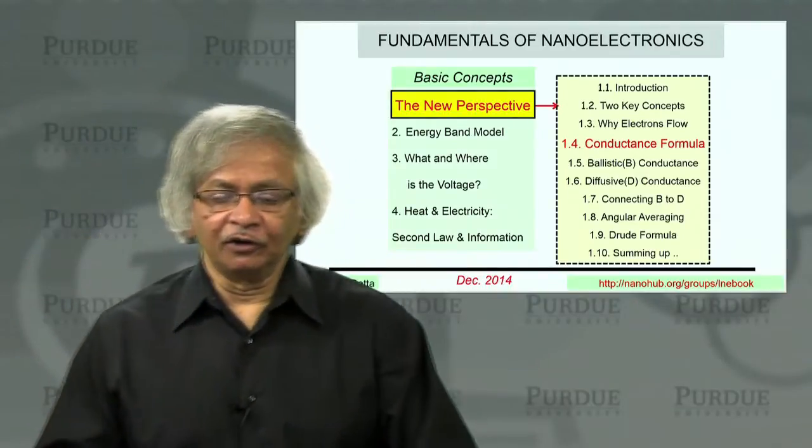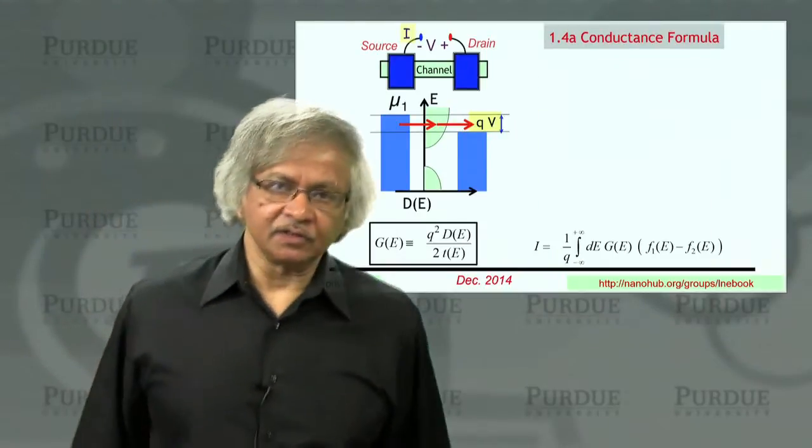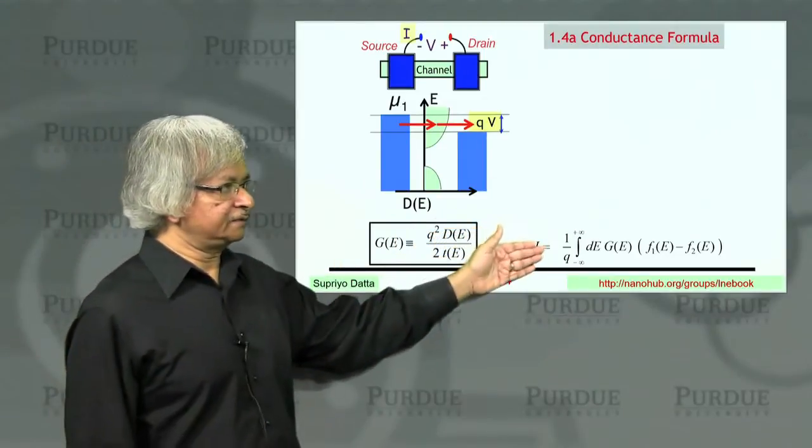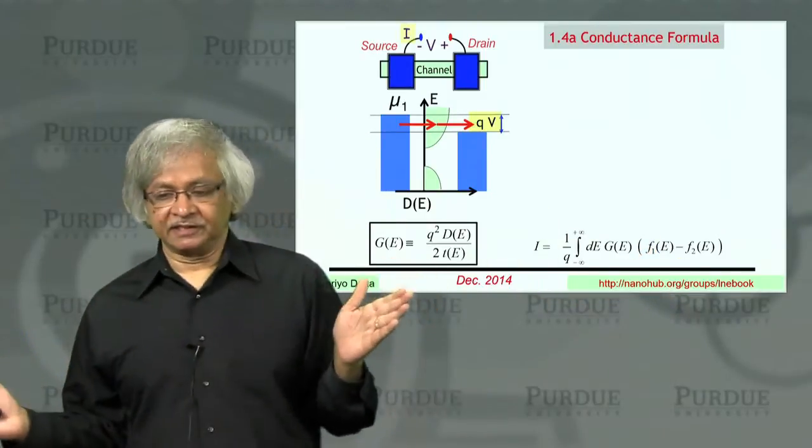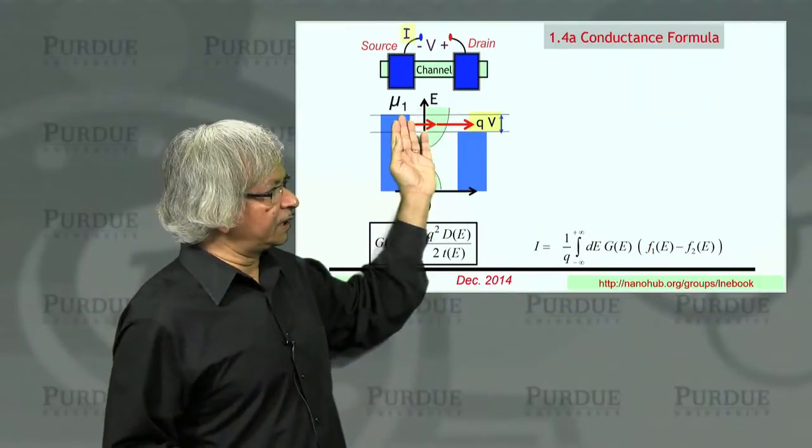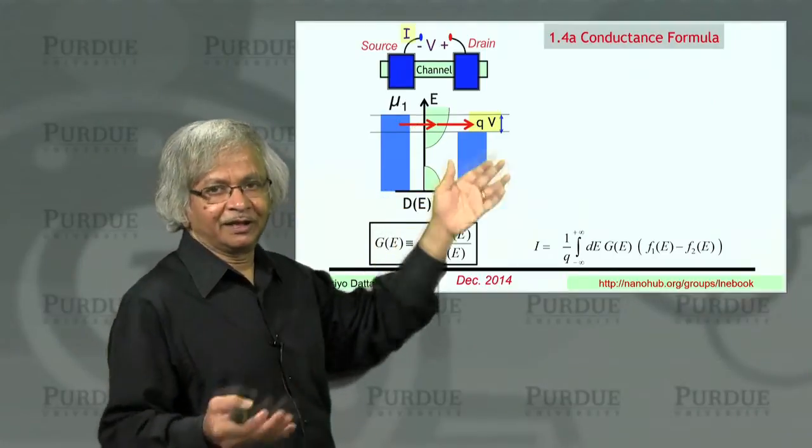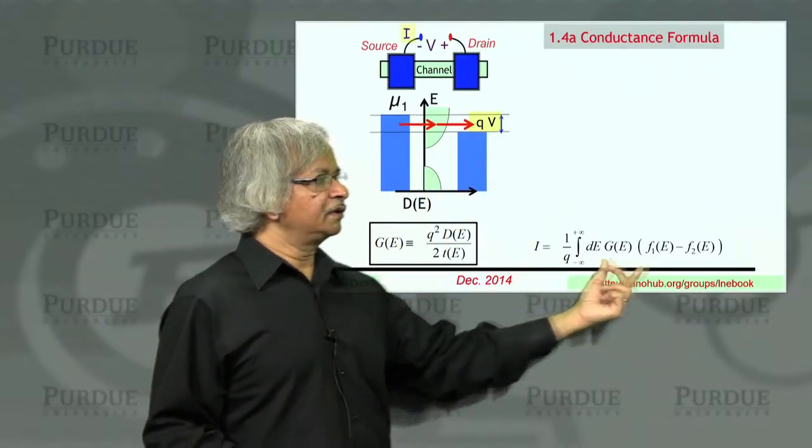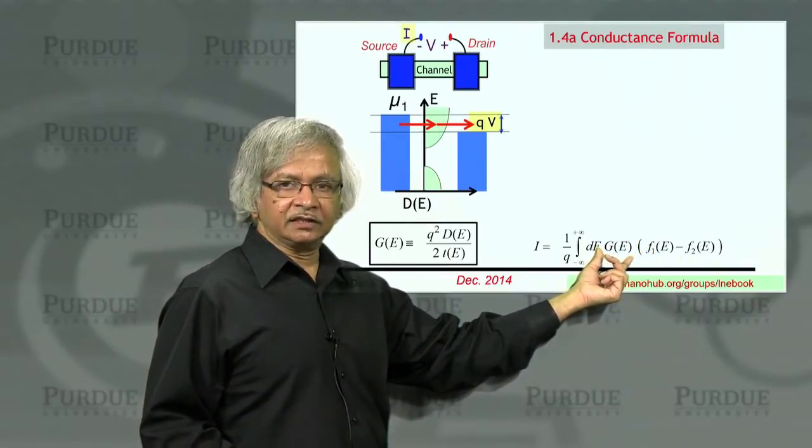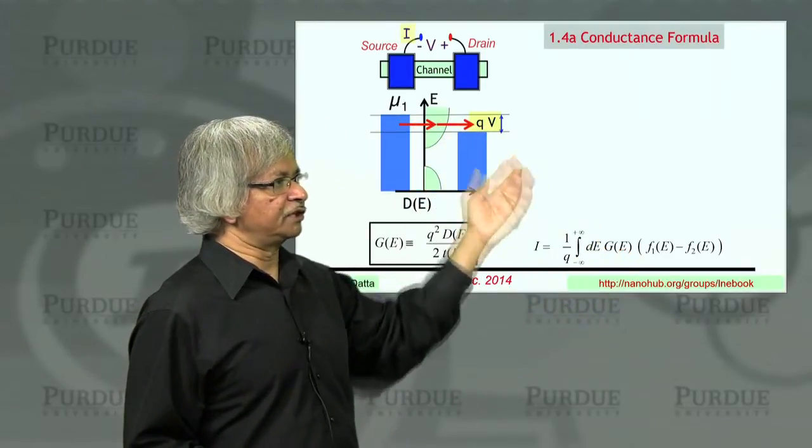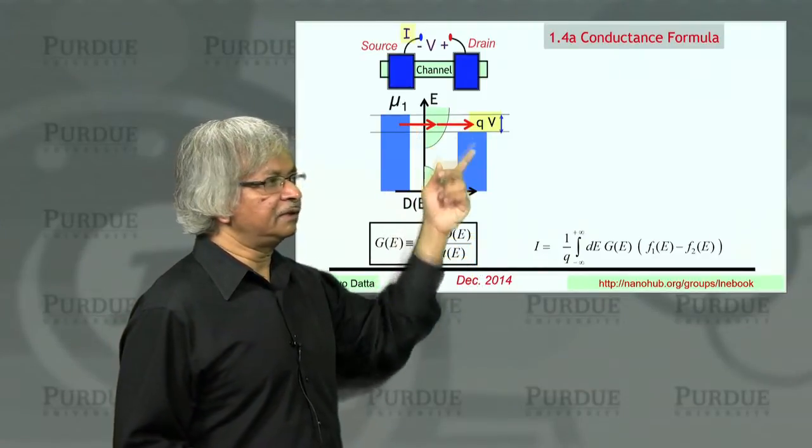Welcome back to the first unit of our course, and we are now on the fourth lecture. In the last lecture, we obtained an expression for the current. This current depends on F1 minus F2, and that is the point I explained physically earlier. Current flows only because the two contacts have two different Fermi functions - one wants to fill it up, the other wants to empty it, and the current that flows depends on the difference. Then there is this conductance factor, which tells you how easily electrons can flow through the channel. That depends on the density of states and the time it takes for an electron to get from left to right.